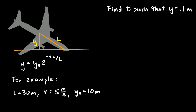So, now let's take this equation and work out an example. Okay, here it is. Here's our equation. And let's suppose that this distance l here is 30 meters. The 767 is a big plane. So, let's say l is 30 meters. And let's suppose it's moving at 5 meters per second. And suppose the initial distance here is 10 meters. And we want to find how long it takes such that y is 0.1 meters.